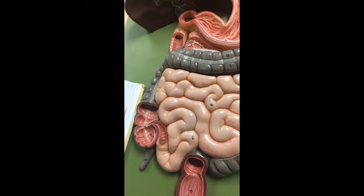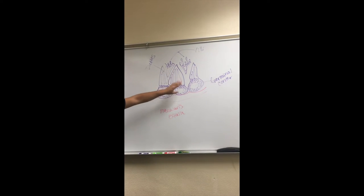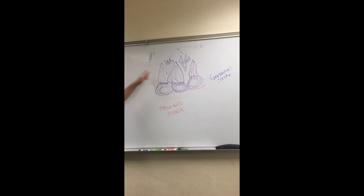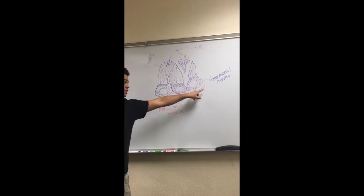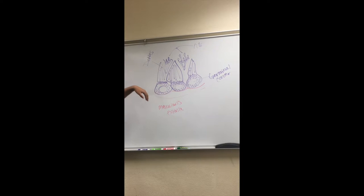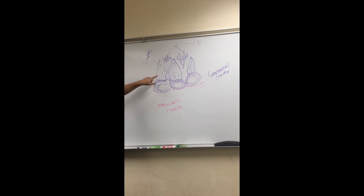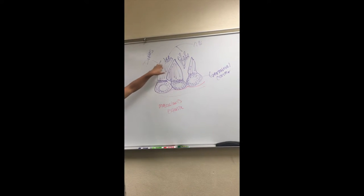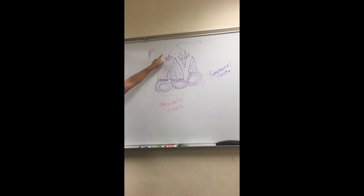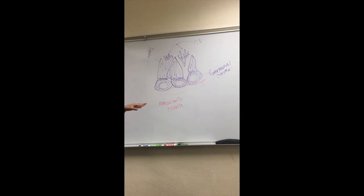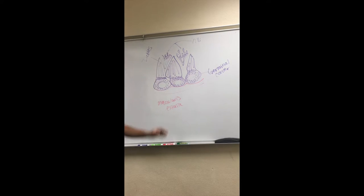This region is called Peyer's patches. Right in the middle of each one is called the germinal center, where the activity happens. The muscularis externa is what they're connected to. At the top are the domes, and in between are the villi. Each villus has microvilli, which increase surface area — these are the finger-like protrusions.